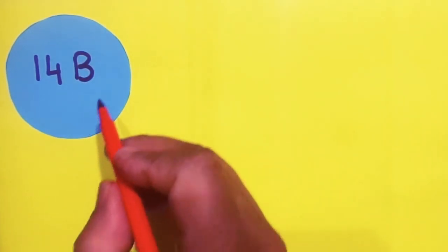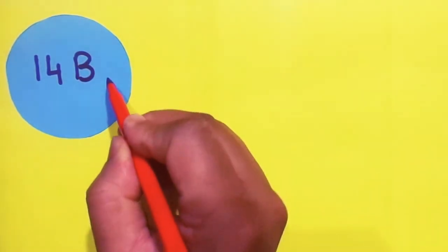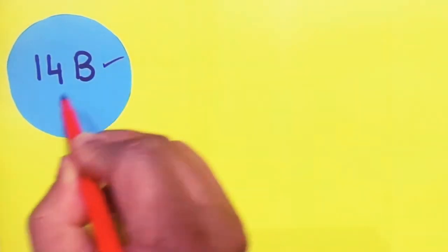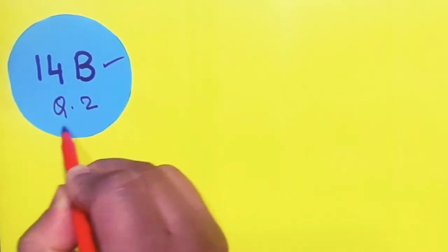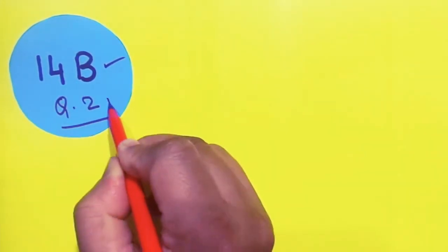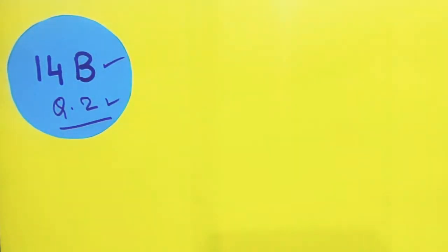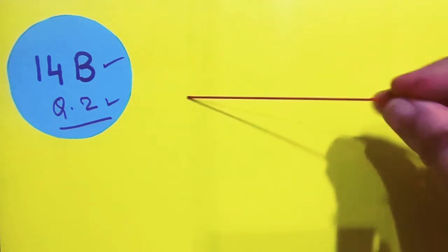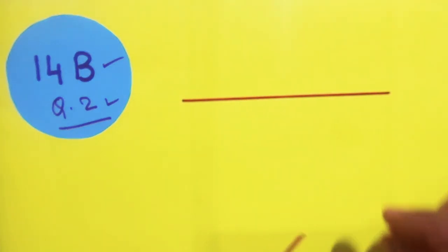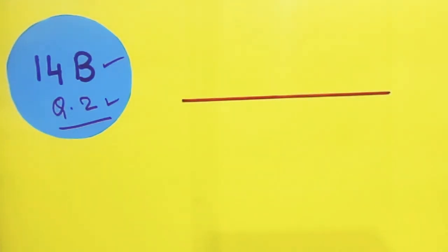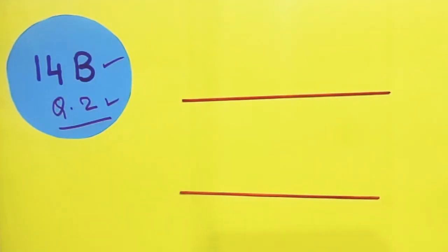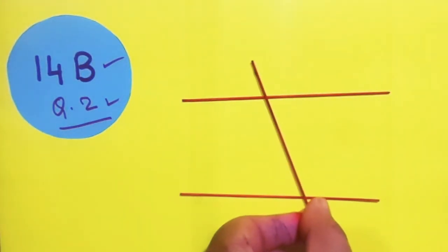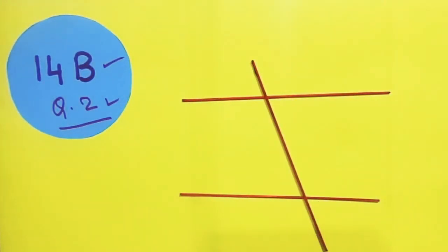Moving on to exercise 14b, number 2. Again, we are to name the different pairs of angles when two straight lines are being intersected by a transversal.